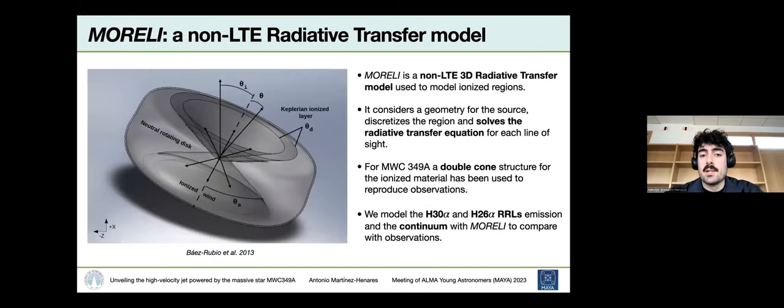To analyze these kind of products from observations, we use a radiative transfer code called MORELI, which stands for Model for Recombination Lines. This model essentially solves the radiative transfer equation for each line of sight. In the case of MWC349A, it's been proven in previous works that the double cone structure works very well to reproduce the observations. We will use this model again to model the ALMA data.